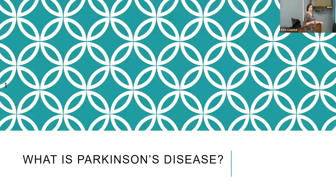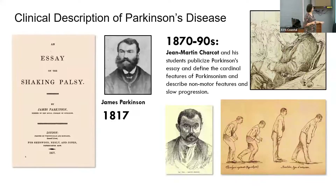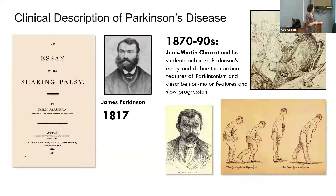What is Parkinson's disease? The clinical description was written in a small essay by James Parkinson in 1817. He described patients who had a shaking palsy — you can see here the description of the gait and posture. Then in the 1870s to 1890s, Dr. Charcot, a very famous neurologist, and his students publicized the Parkinson's disease essay so that people would have more knowledge about it. So we've known about Parkinson's for quite a long time.